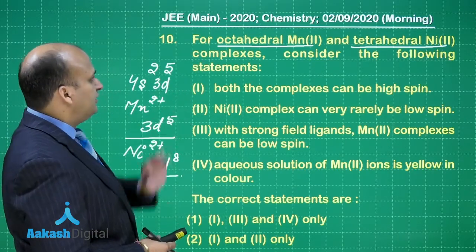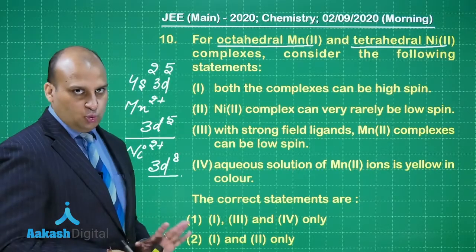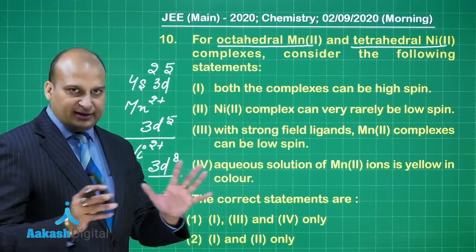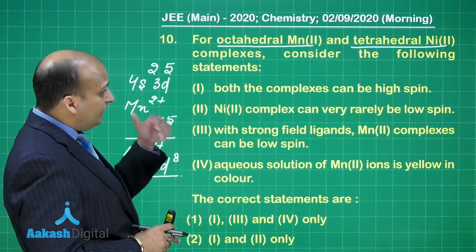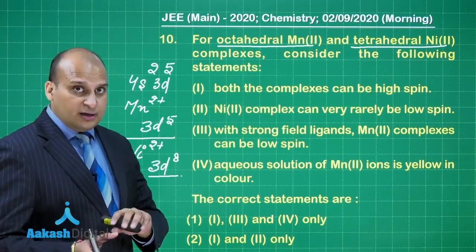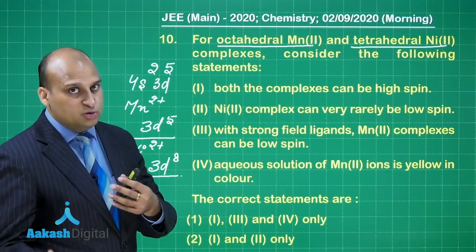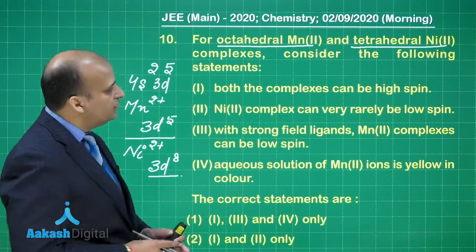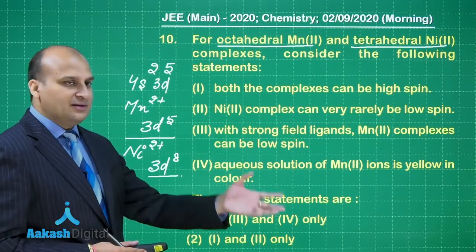Now, first of all, he is saying octahedral Mn2+. So basically, 6 ligands are going to attack. Now if these 6 ligands, if you check up, if they are strong or they are weak, you might either get a low spin complex or a high spin complex. That is what the question is based on. Let us have a look at it.